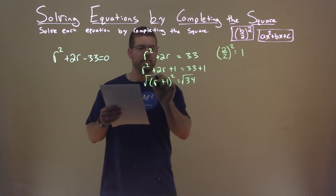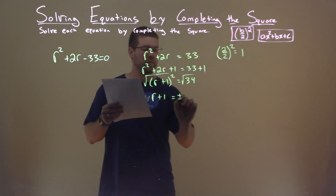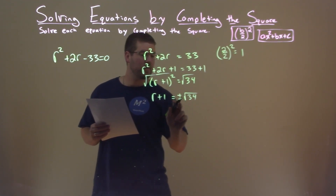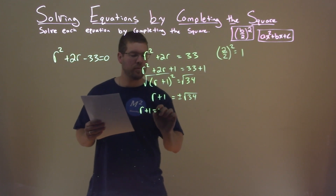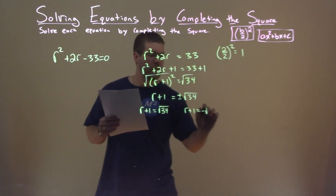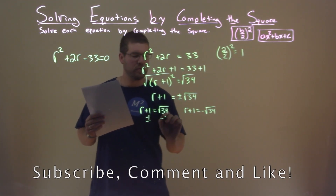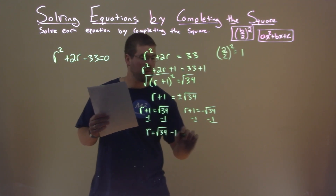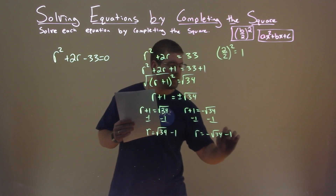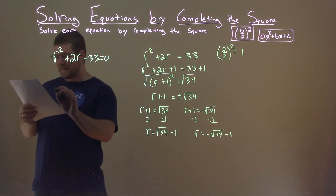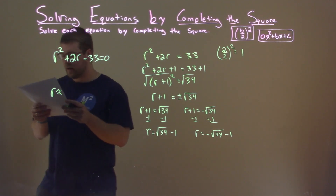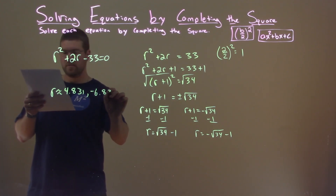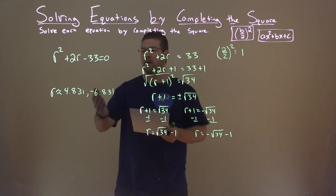Taking the square root of both sides, we have R plus 1 equals plus or minus the square root of 34. Breaking this apart: R plus 1 equals positive square root of 34, and R plus 1 equals negative square root of 34. Subtracting 1 from both sides: R equals square root of 34 minus 1, and R equals negative square root of 34 minus 1. Those two answers in decimal form are approximately 4.831 and negative 6.831, and those are our final answer.